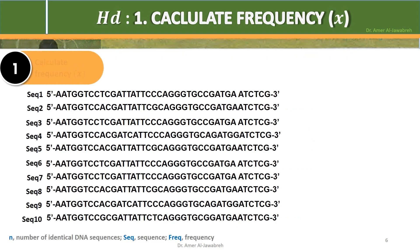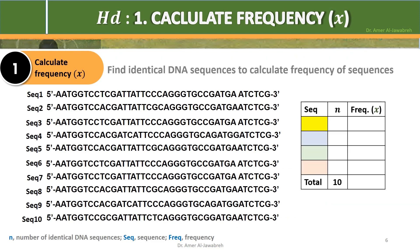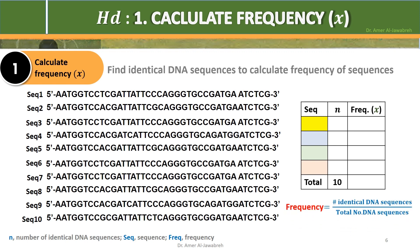Step 1: Calculate frequency, which is the number of identical DNA sequences over the total number of DNA sequences. Using color code for clarification, sequences 1, 3, 6, and 7 are identical, giving an X of 0.4.